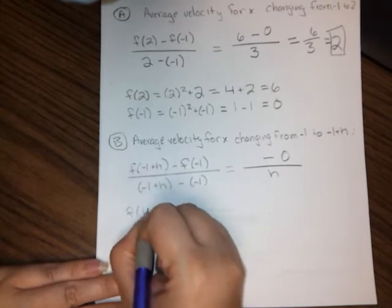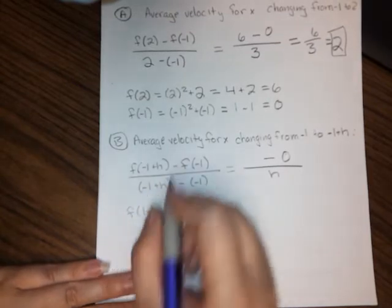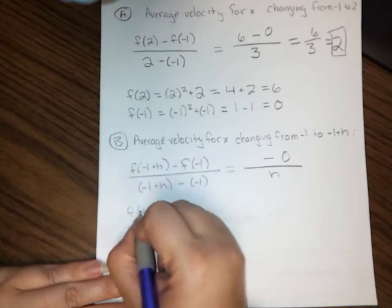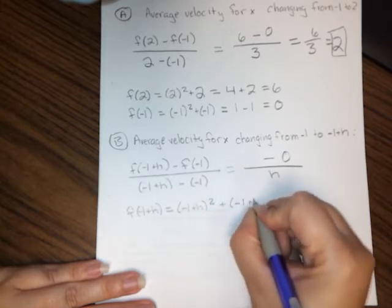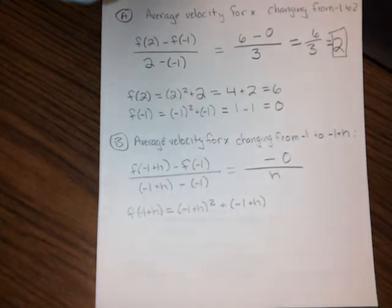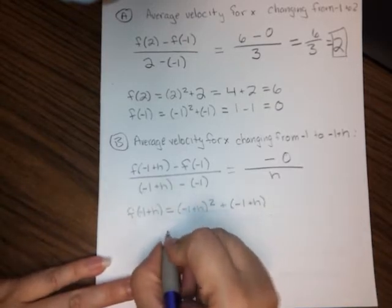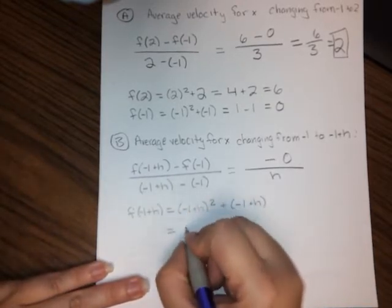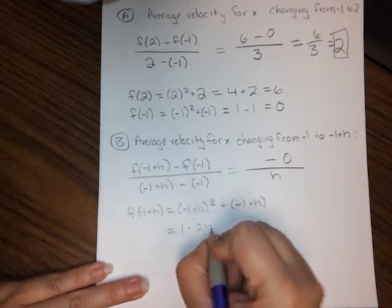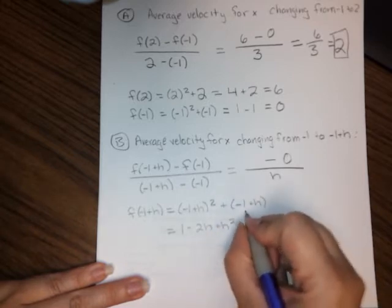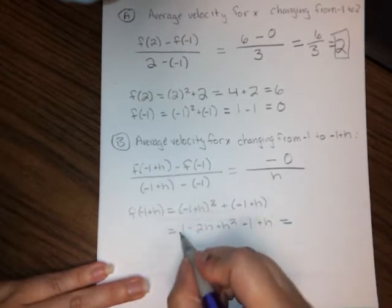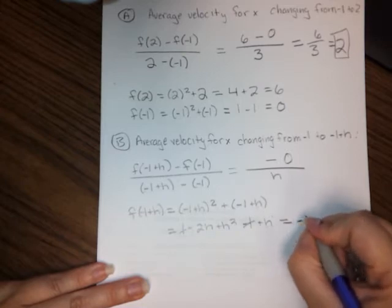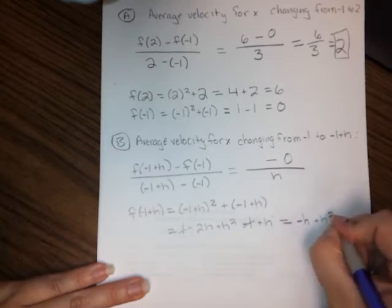So let's find that. f of negative 1 plus h. Well, I plug in negative 1 plus h into my formula here. So negative 1 plus h squared plus negative 1 plus h. You need to be a little bit careful with your algebra here, because we've got some negative signs floating around. But all in all, this isn't too hard to figure out. So if you foil this guy out, you're going to get 1 minus 2h plus h squared, then plus a negative 1, that's going to be minus 1 plus h. And if I simplify that, well my 1 minus 1 cancels. Minus 2h plus h, that's just going to be a negative h plus h squared.